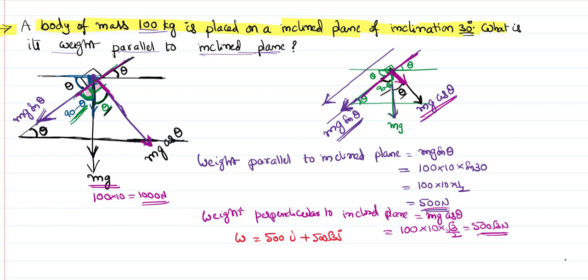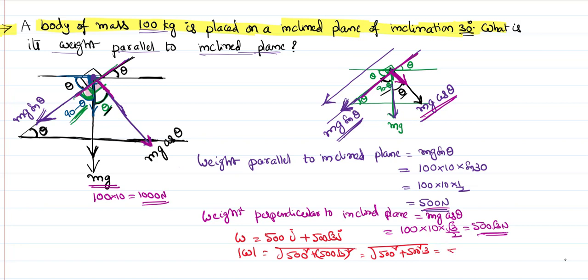Depending on which axis is x and which is y, we can also write it as 500√3 ĵ and 500 î. The magnitude is the square root of the x-component squared plus the y-component squared: √(500² + (500√3)²) = √(500²(1 + 3)) = 500 × √4 = 500 × 2 = 1000 newtons. We get back our original 1000 newtons — no weight is lost. We simply resolved it into a component parallel to the inclined plane and a component perpendicular to it. That's how we solve this problem.